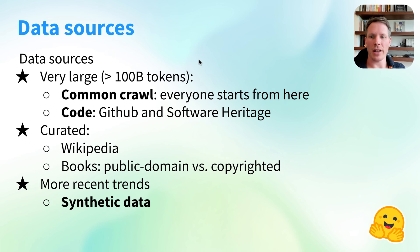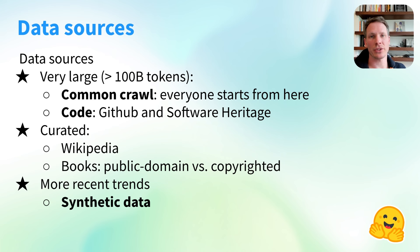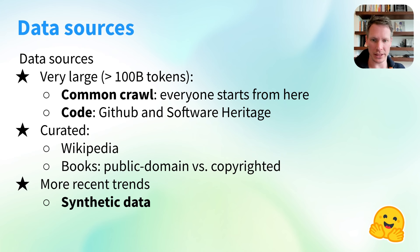Where can you start from? You want something very large, because you'll just keep about 10% of it. There are two main large sources of data today: one is Common Crawl — the internet basically — and the other is for code, where you usually want to start from GitHub or Software Heritage, a place where code has been carefully extracted from the web. You can also use curated sources like Wikipedia or books. For books there is a big question: should you use only public domain books, which stops about 100 years back — so around 1924 for today — or do you dive into copyrighted material? That's a big question for model trainers today.